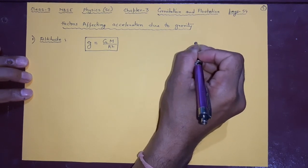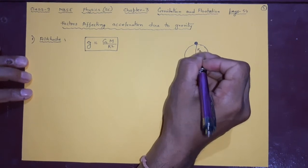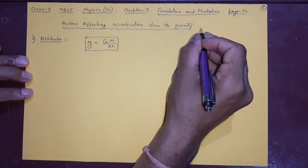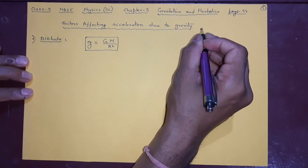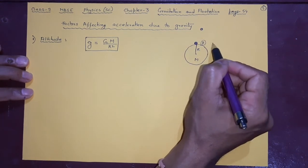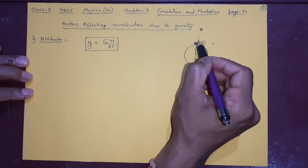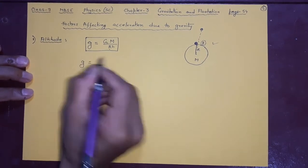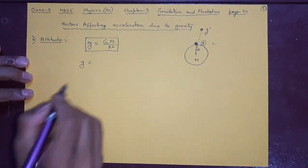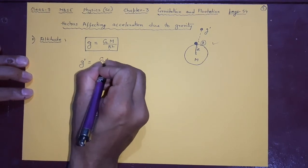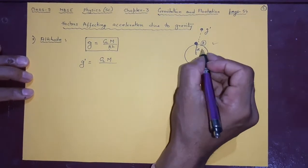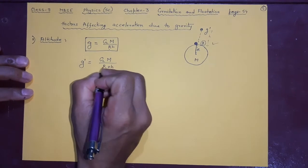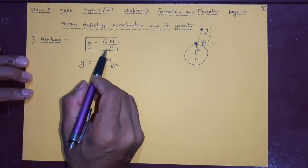Suppose this is the earth and this is where we are measuring the acceleration due to gravity. This is the mass of the earth and this is the radius of the earth. Suppose you go a little far — you go here and try to measure g. Here g = GM/r². But when you reach higher up, the radius increases, so the distance becomes r plus some height h. So g here = GM/(r+h)².